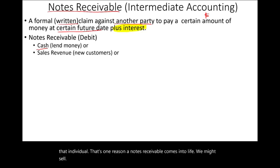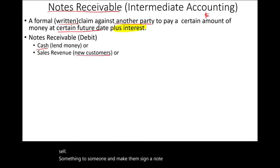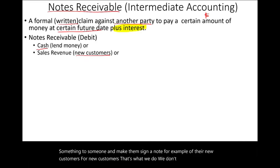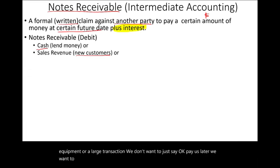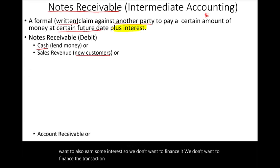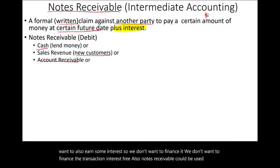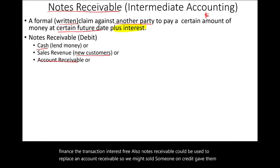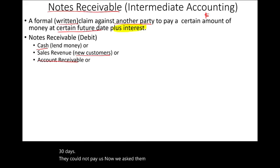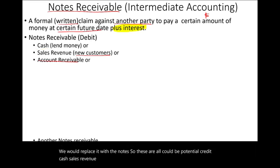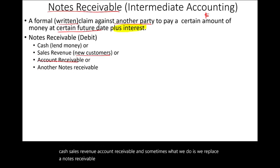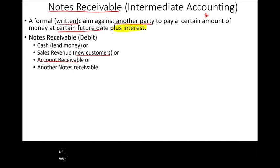Notes receivable come into existence in several ways. We can lend money — give someone cash and as a result debit notes receivable and credit cash. We might sell something and make them sign a note, such as for new customers or large transactions where we want to earn interest. Notes receivable can also replace an account receivable when a customer cannot pay within terms, or we might replace an old note with a new note.